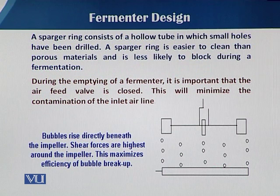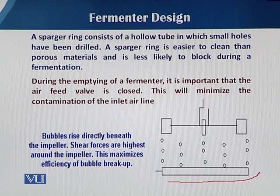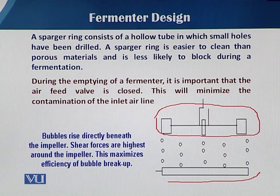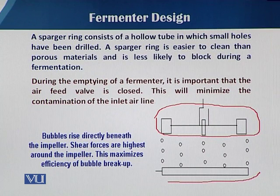In this slide, you can see there is a sparger having 1, 2, 3, 4, and 5 different points from where the air oozes out, and above this aeration sparger there is an impeller and agitation system. When the sparger facilitates distributing the air bubbles into the fermentation media, there is a proper distance from the impeller system that will control the bubbles and their distribution.